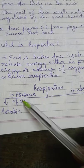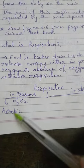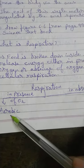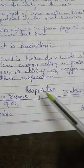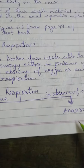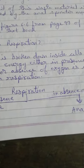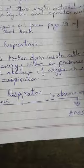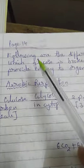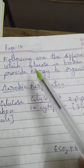Respiration may be of two types. If it takes place in the presence of oxygen, it is called aerobic respiration. If it takes place in the absence of oxygen, it is called anaerobic respiration. So there are two types: aerobic and anaerobic.